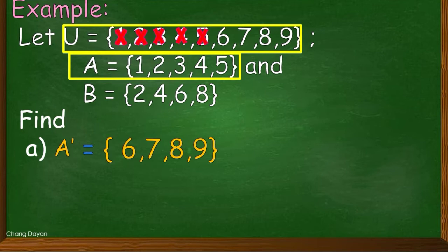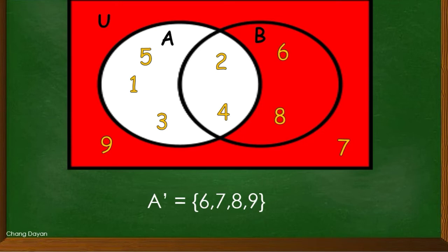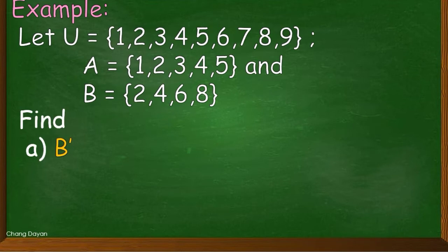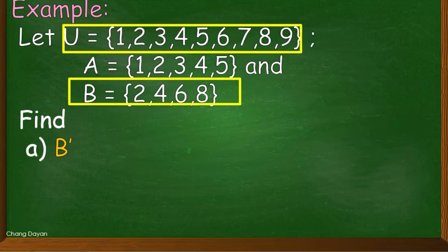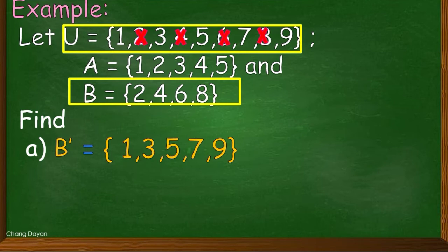So our Venn diagram is like this. As you observe, the region where 6, 7, 8, 9 are located has been shaded. Now let us have B'. When you say B', we need to get the elements that can be found in our universal set but not in B. The elements in set B should be excluded — so we exclude 2, 4, 6, and 8. Therefore, the complement of set B consists of the elements that are left: 1, 3, 5, 7, 9.